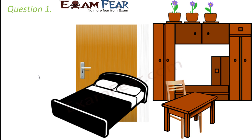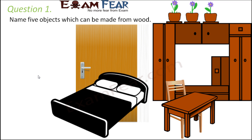Question number one: name five objects which can be made from wood. A lot of things in your house are made up of wood. Most of the furniture — whether you talk about bed, table, chairs, doors, almira, or cupboards — they are all made from wood, so wood can be a constituent for all of these.